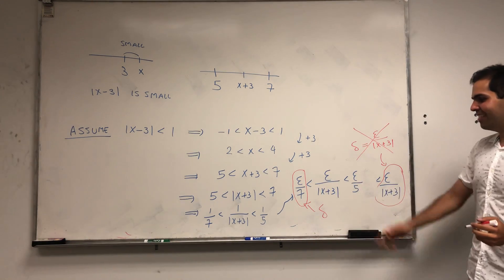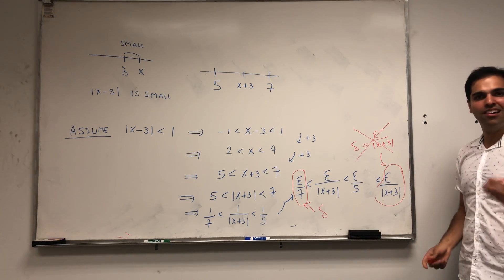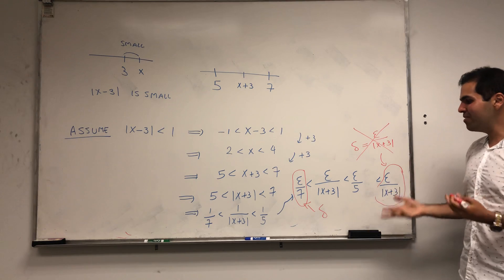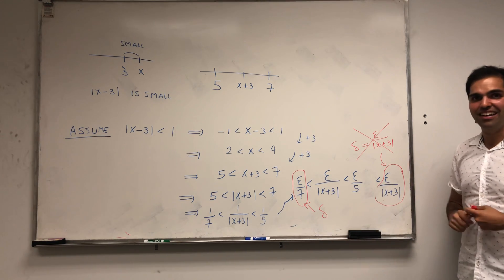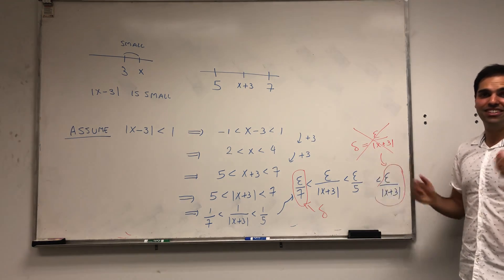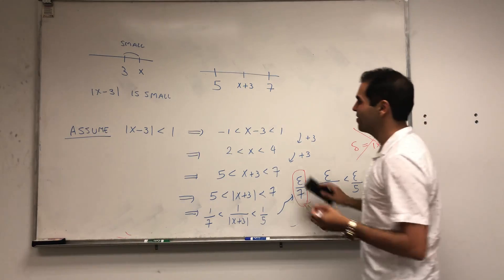This is our new delta. It depends on epsilon, which is okay, but more importantly it doesn't depend on x, which is even better.